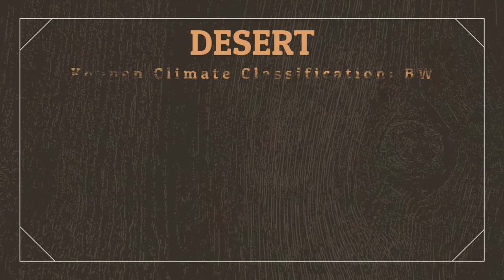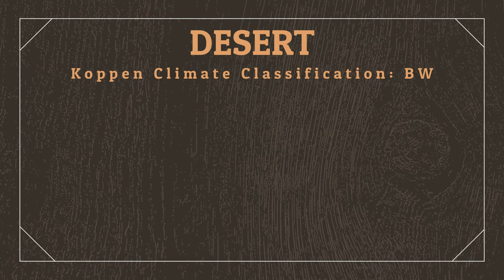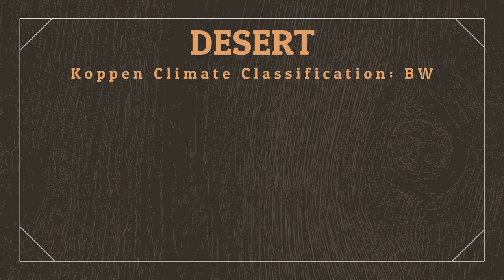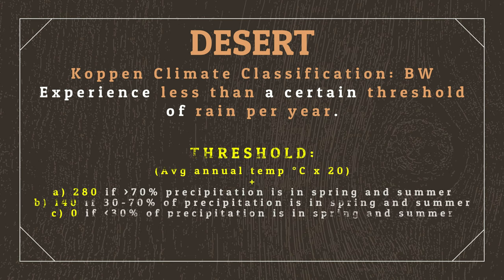Alright, let's do this. Deserts, according to the Koppen Climate Classification System, are categorized as areas that experience less than a certain threshold of rain per year.